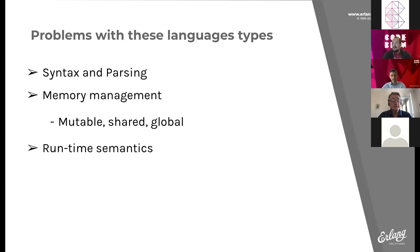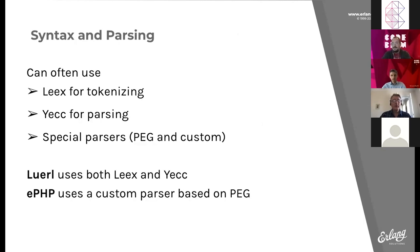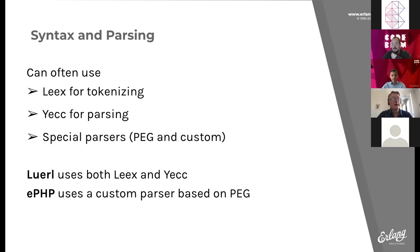There are a couple of tools in the standard Erlang OTP system for doing syntax and parsing: Leex for tokenizing and Yecc for parsing. Sometimes we can use those; other times they just don't fit, so you'll have to write special PEG or custom parsers. For Luerl we can use Leex and Yecc, whereas ephp uses a custom parser based on PEG.